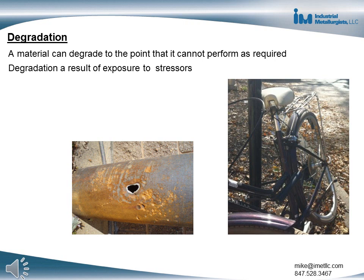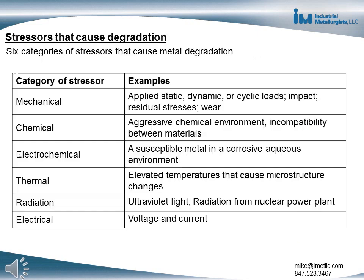When an item fails during use, it does so because it has degraded to the point that it cannot perform as required. The degradation is a result of exposure to various stressors. There are six categories of stressors that can cause metal degradation: mechanical, chemical, electrochemical, thermal, radiation, and electrical.